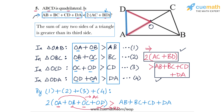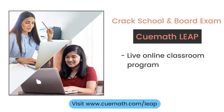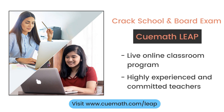So what we have obtained is: twice the sum of the two diagonals is greater than the sum of the four sides — in other words, the sum of the four sides is less than twice the sum of the diagonals. The inequality given in the original question is correct. That completes question number five. To learn more about how QMath can help you crack school and board exams, explore QMath Leap, a live online classroom program run by highly experienced and committed teachers.